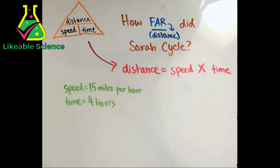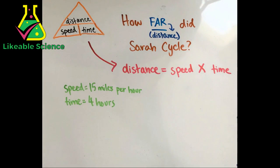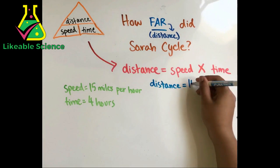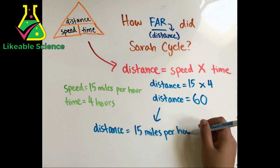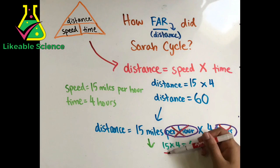If we plug in the numbers, we get distance equals 15 miles per hour times 4 hours. 15 times 4 is 60, but as always we need to add units to our answer. Hours is a common unit here because it appears twice, so they cancel each other out. The only uncommon unit is miles, so the answer is distance equals 60 miles.